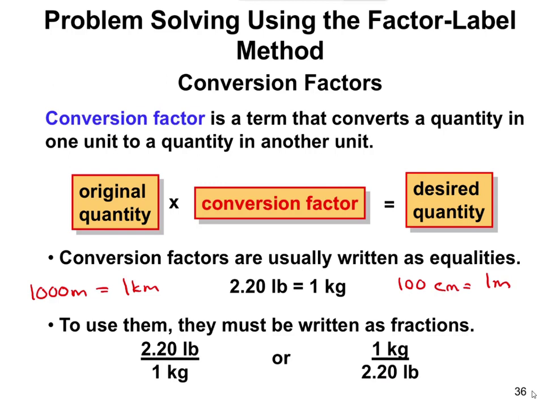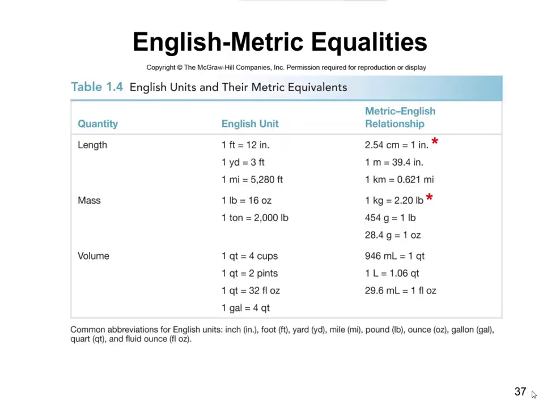And so even though this and that are the same, we have to pick the right one to use whenever we do a conversion. And the way that you do that is basically by setting up your math so that your units cancel out. So let's look at what we mean by that.